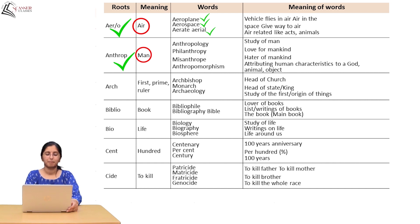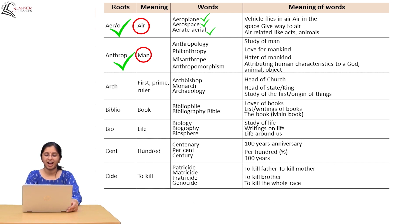BIO means life. Different words can be formed from this root word. Biology means study of life. Biography means writings on life. Biosphere means life around us. In all these words, 'bio' appears and the meaning contains 'life'. So if you know the meaning of the root word, you can understand the meaning of the entire word.